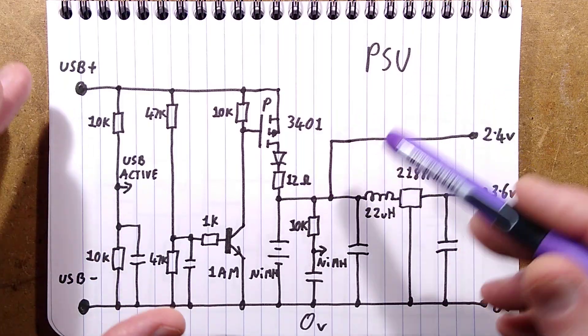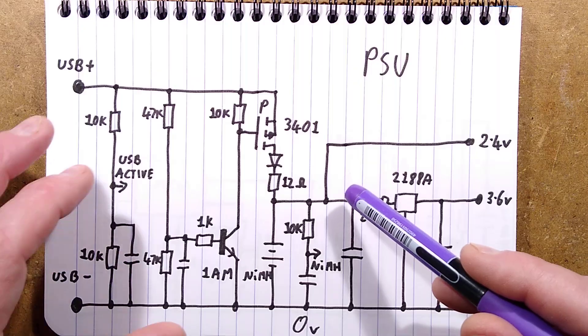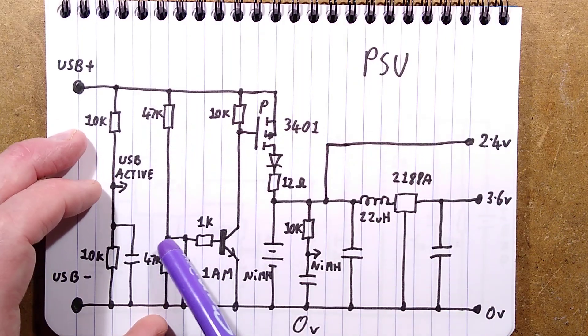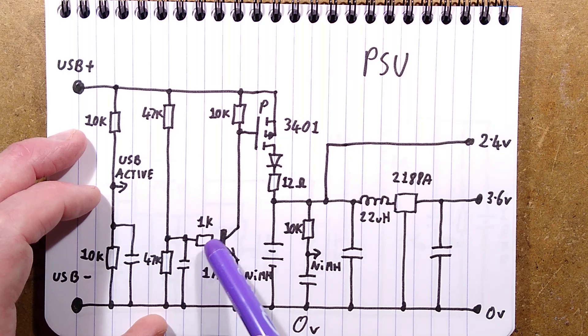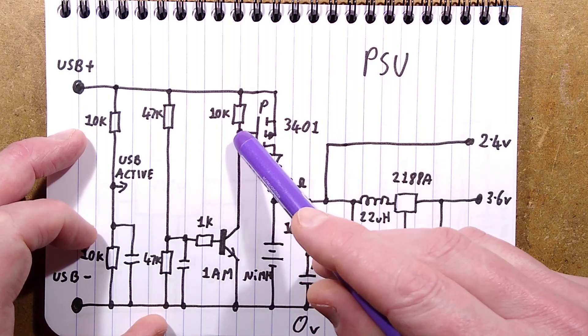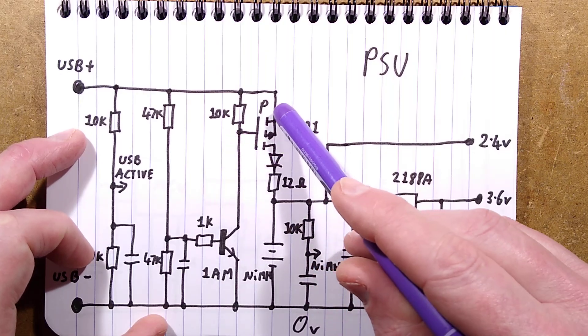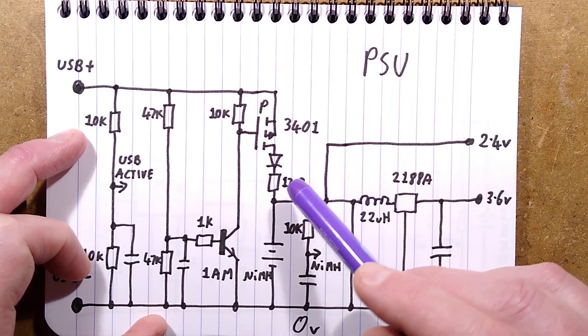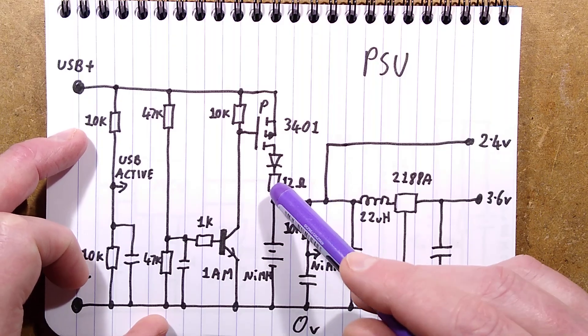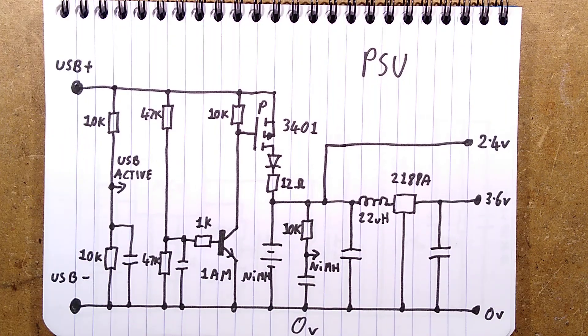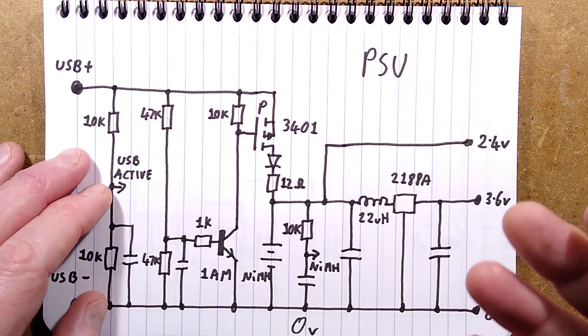If the batteries were completely flat when you first got it and you plugged it in, what would happen is that this potential divider here would provide a gate signal, a base signal, should I say, to this NPN transistor. And that would pull down the gate of this MOSFET. The MOSFET would then allow current to flow through this diode and this fixed value 12 ohm resistor into the nickel metal hydride cells.